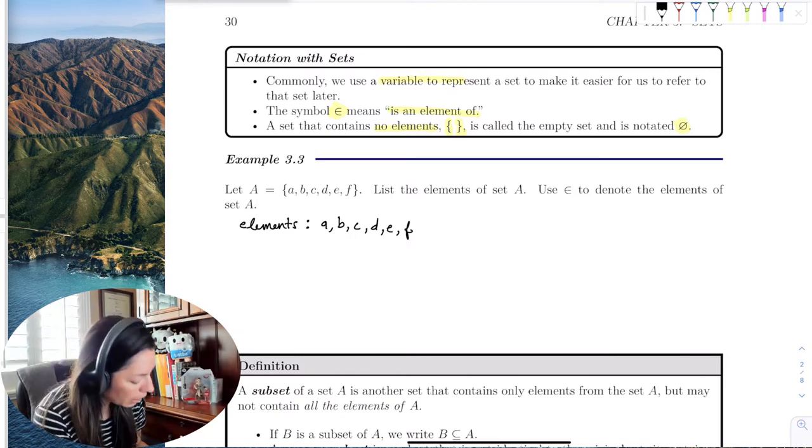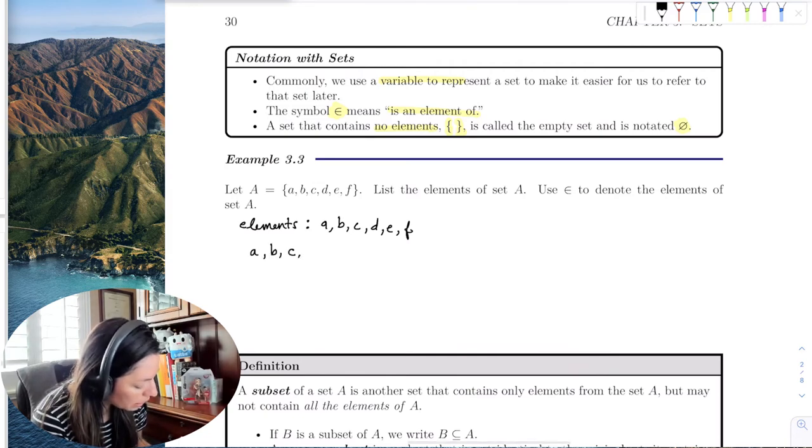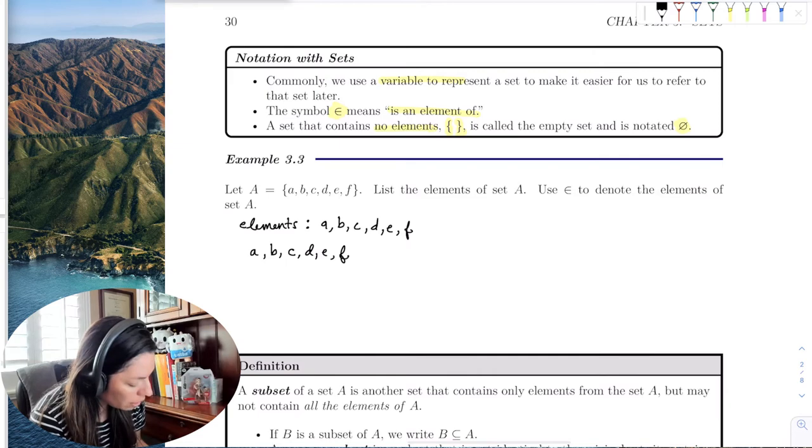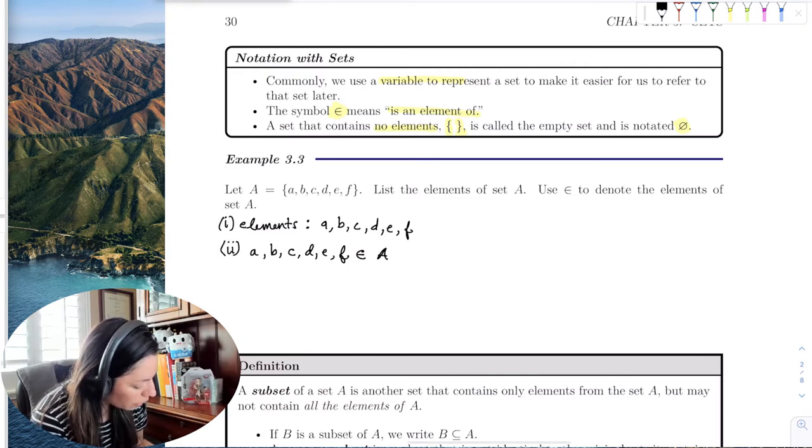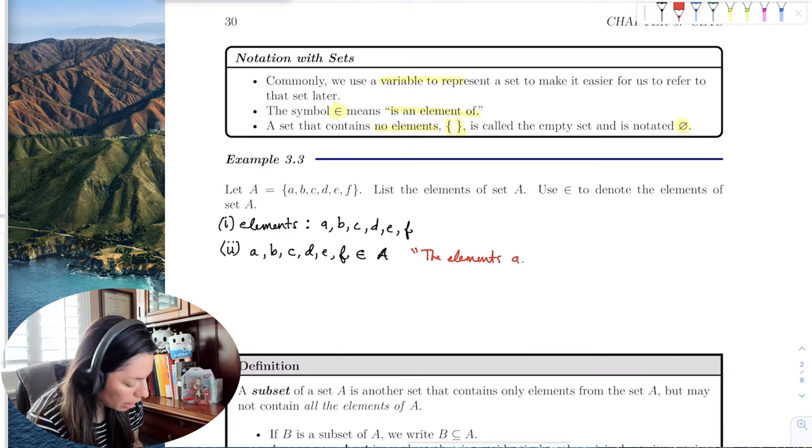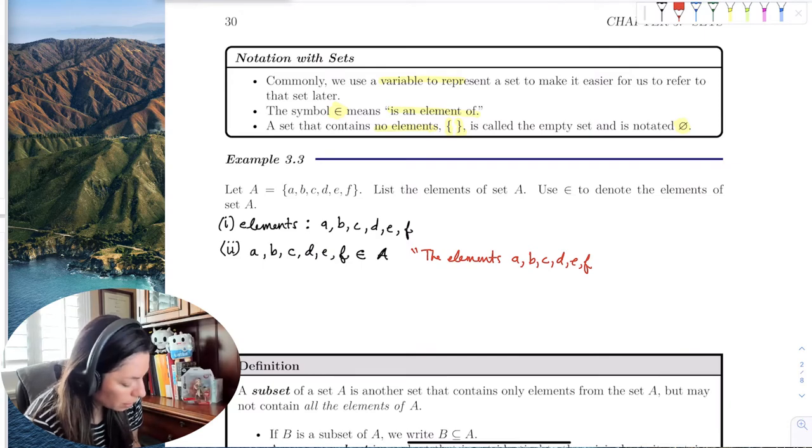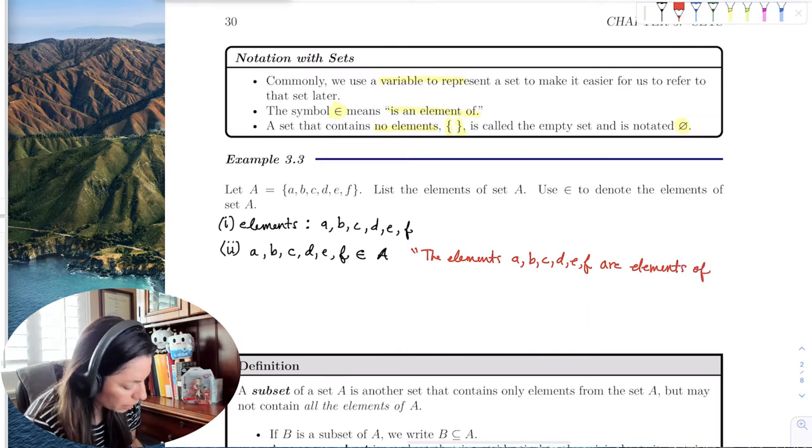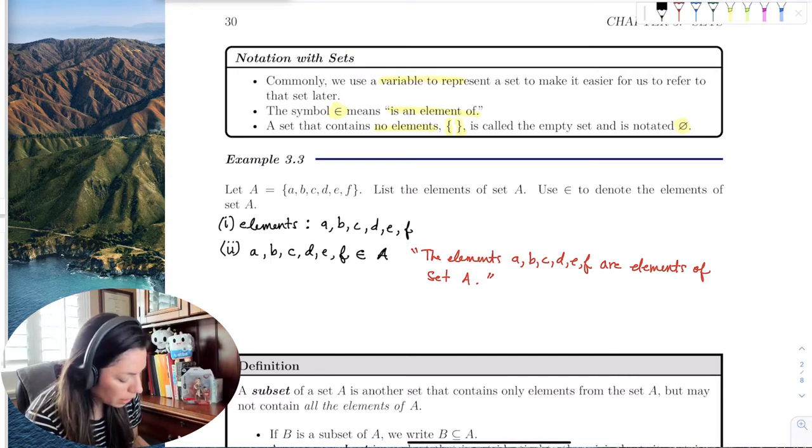And we can use the element of symbol to denote the elements as a set of A. So in this case, we would say A, B, C, D, E, F are elements of the set A. So if I wrote that in words, let me say it again. I would say the elements A, B, C, D, E, F are elements of set A.